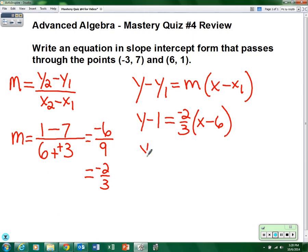Alright, so I'm going to simplify. So y minus 1 equals... distribute the negative 2/3 through, so negative 2/3 x, and negative 2/3 times the minus 6.